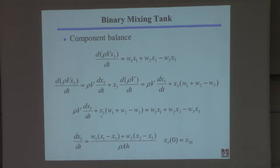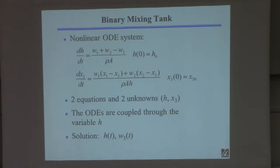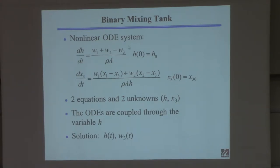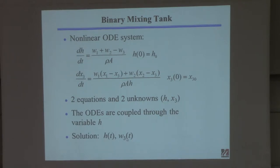So we have two equations: one for dH/dt and one for dX3/dt. Each needs an initial condition. These two equations are coupled — the X3 equation depends on H. These equations are non-linear because on the right-hand side the dependent variables H and X3 don't appear linearly; you're dividing by H. Solving them means finding how the level and composition change with time.